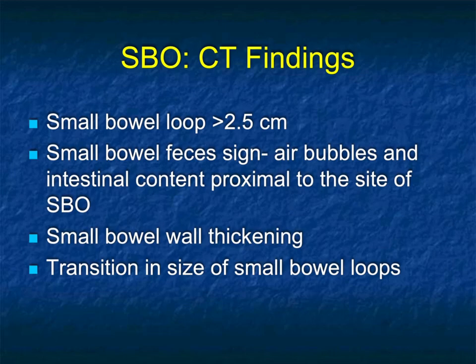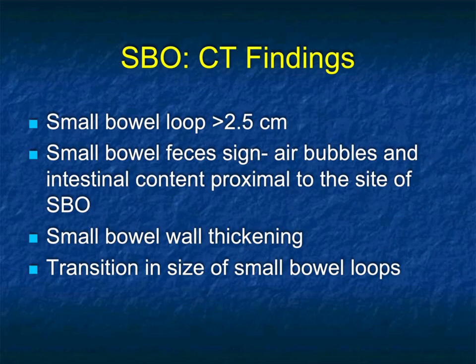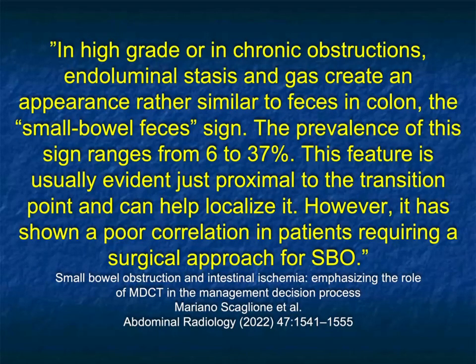Small bowel loops are typically considered dilated when they're above 2.5 centimeters. We look at the feces sign, where you see air bubbles and intestinal content proximal to the site of obstruction — though sometimes a feces sign can be seen in patients with poor transit due to malabsorption. Most of the time we're looking for transition points: we look at dilated loops of bowel, where the change occurs, and whether the cause is a mass, hernia, adhesion, or other possibility. Small bowel obstruction is one of the critical things we routinely look for; the feces sign occurs in up to a third of patients.